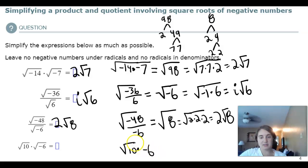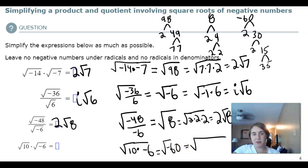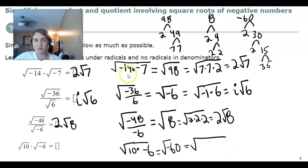10 times negative 6. This is negative 60. 2 times 30, 2 times 15, 3 times 5. But I don't want to forget that negative 1. Negative 1 times 2 times 2 times 3 times 5. And our negative 1 becomes an i, 2i square root of 15.